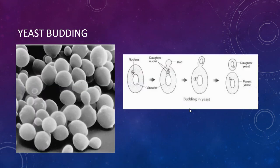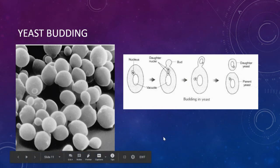Yeast does this as well. We know yeast is important in baking, brewing, and making ethanol. The way yeast organisms reproduce is by budding — they create a little organism off the side. Yeast is a fungus; they're a single cell, and they also reproduce by sexual reproduction.